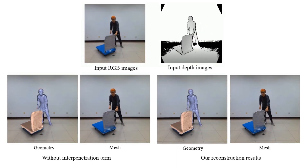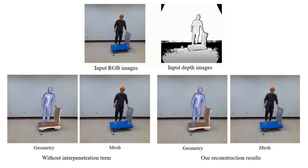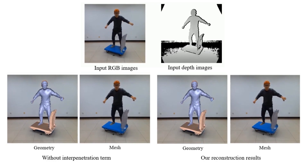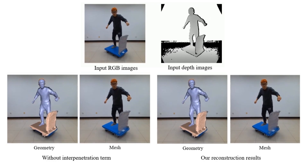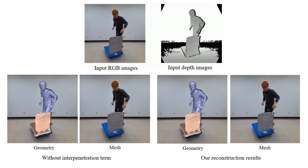For robust human tracking, firstly, benefiting from our interpenetration term, we successfully avoid the interpenetration between the human and cart models.